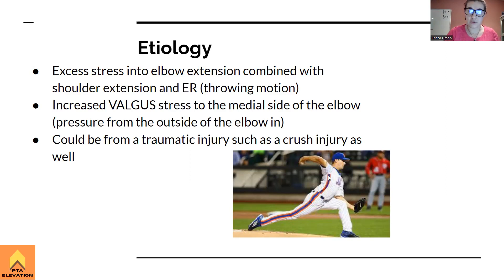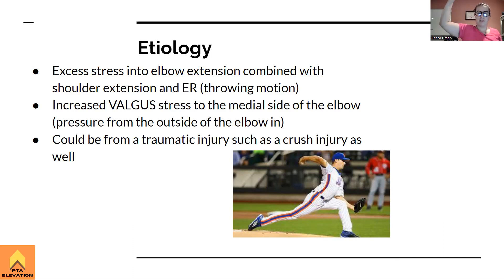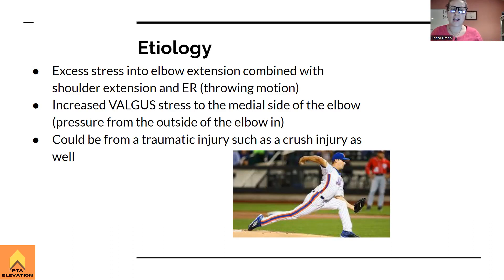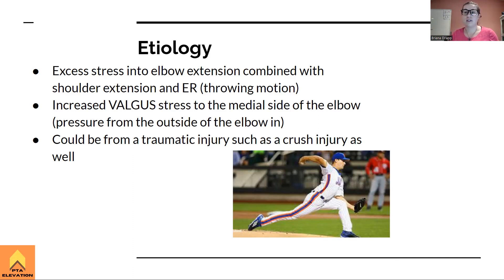That image shows someone who actually had a partial UCL tear. You can see the extreme position — if you try to put your arm into that throwing posture, you can already feel the pressure on the medial side of the elbow. The torque from pulling the arm back to whip it forward is what causes the tear. This usually occurs from repetitive overuse, which is why we worry about kids throwing too many pitches per game — they can end up needing Tommy John surgery as early as high school or college.